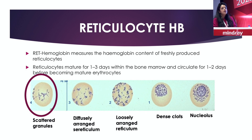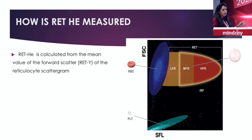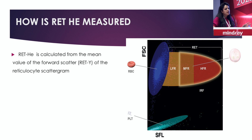This is the reticulocyte in the peripheral blood and we try to pick up the reticulocyte hemoglobin from these reticulocytes. We use a scatter plot where the x-axis shows fluorescence and the y-axis shows forward scatter. Cells with low fluorescence and low scatter are the platelets and RBCs, while cells on the right with high fluorescence are the reticulocytes. We calculate the hemoglobin in these reticulocytes using this scatter plot.